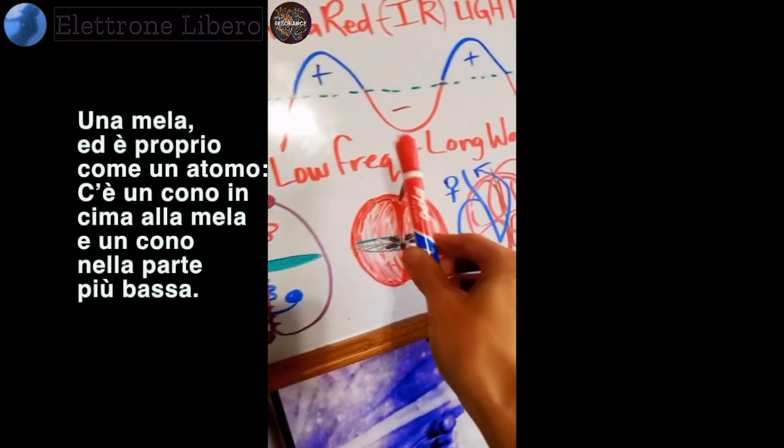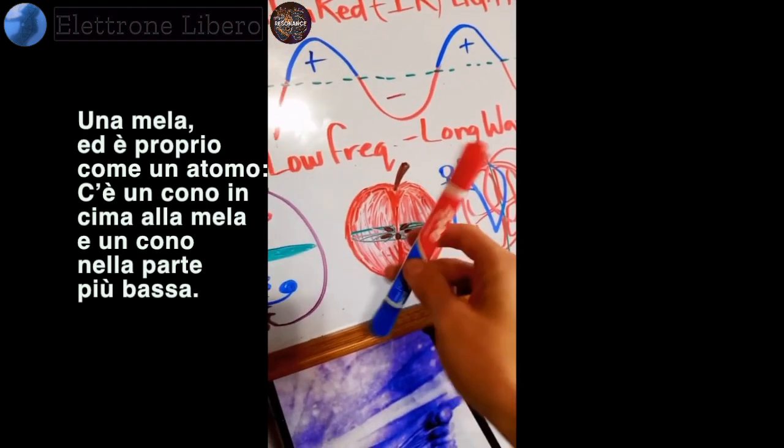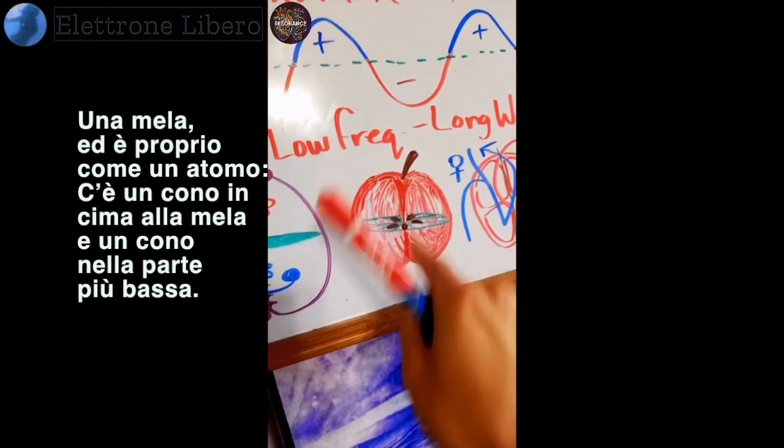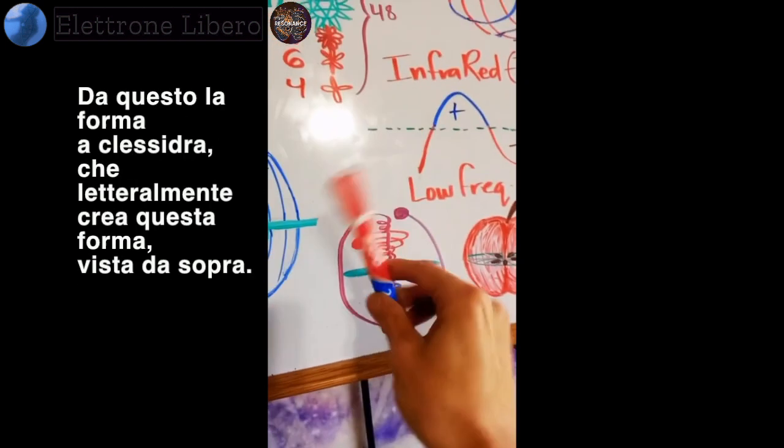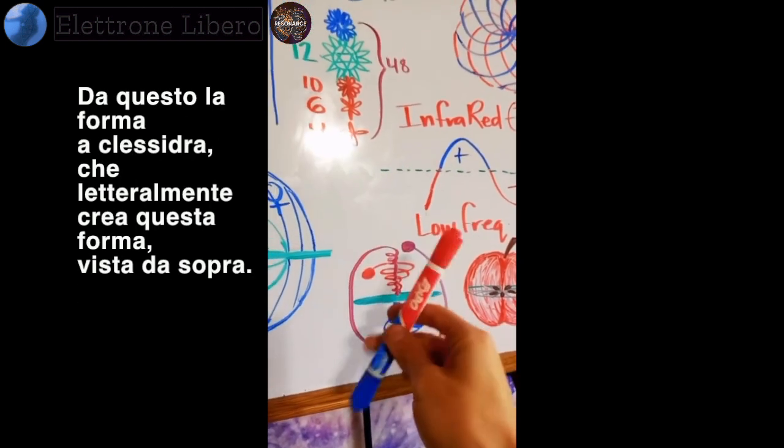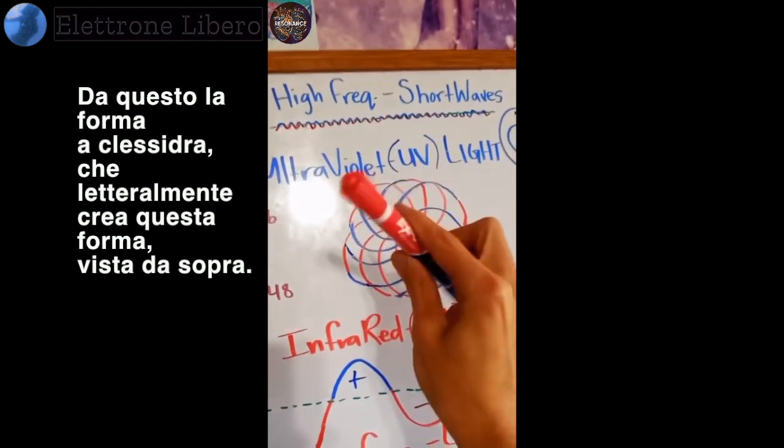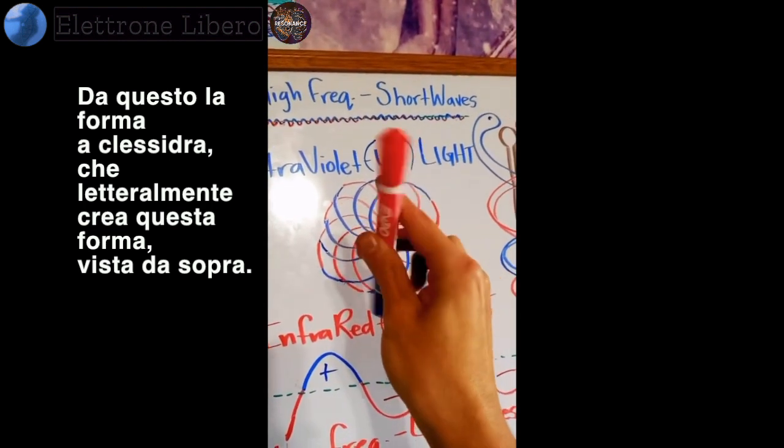That's an apple, and it's just like your atoms, because there's a cone at the top of the apple and a cone at the bottom, made by the hourglass shape, which literally makes this shape.